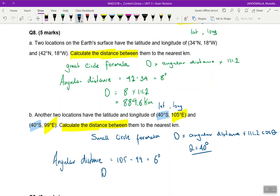All right, then the distance d is going to be 6 degrees times 111.2 cos 40. That 40 comes from there, the same line of latitude. And that distance is 511.1.